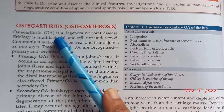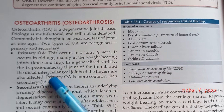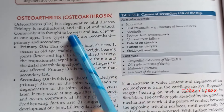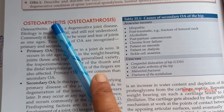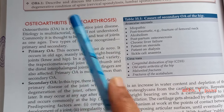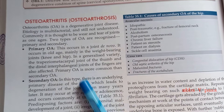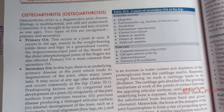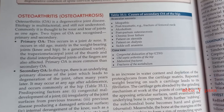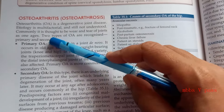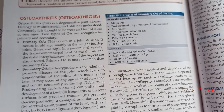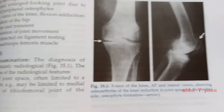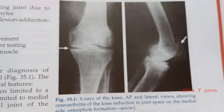Osteoarthritis is very, very important, because most patients you will see after around age 50 will all have osteoarthritis. If they write OA knee anywhere in the case sheets, you should remember what it stands for: osteoarthritis.